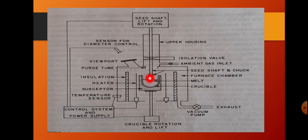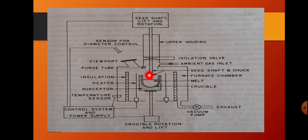The important parameters are the pull rate and the growth rate. When the seed is dipped into the molten silicon, the molten silicon attaches to it, and then it is pulled upwards so the molten silicon solidifies — this is the growing process. There is a viewport to observe inside the chamber. The seed crystal moves through the purge tube upwards into the upper housing chamber. An isolation valve separates the seed crystal section from the furnace section.